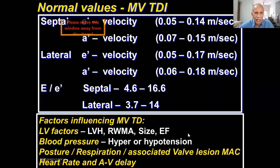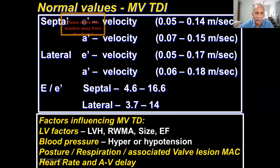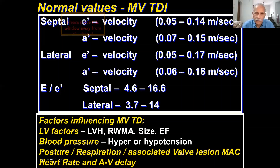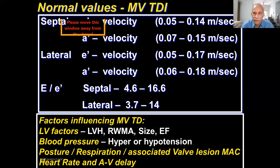The guideline recommends averaging septal E' and lateral E' for the E/e' ratio. Blood pressure is not always recorded and ECG is not always present — if the patient has shortness of breath and LV function looks normal and the valve looks okay, you must assess diastology. For that you need to know the blood pressure and ECG characteristics. Make sure you measure blood pressure and have a proper ECG. Hypertension alters all these parameters.